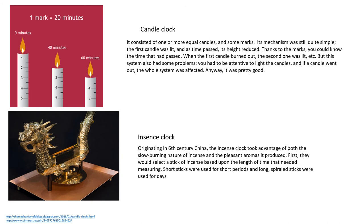Other primitive clocks were the candle clock and the incense stick clock. Candles were graduated as shown in the picture. Similarly, incense sticks installed on a graduated metal surface, when burnt, would indicate how much time had elapsed. For such apparatuses, uniform size and diameter of the candles and incense sticks were a prerequisite condition, and this was professionally mastered.